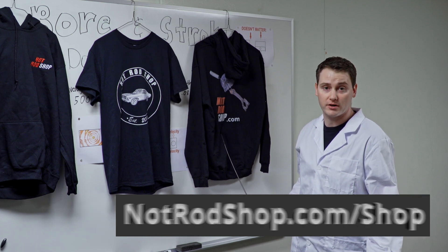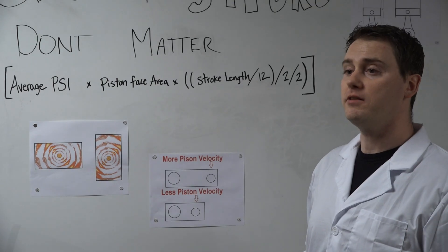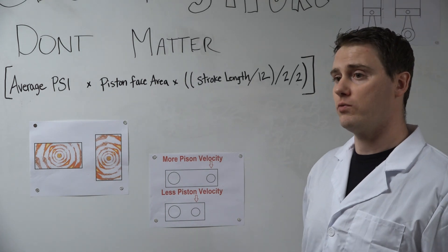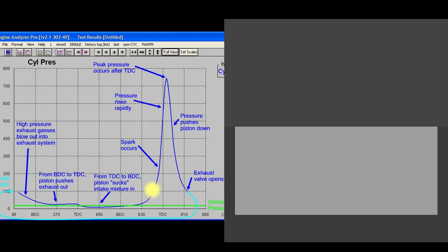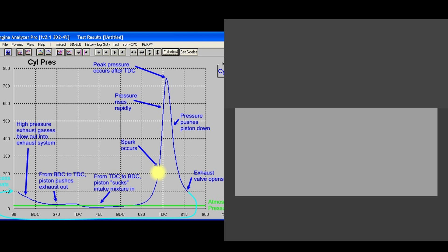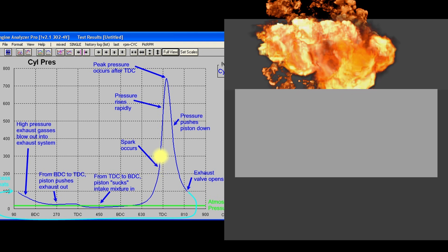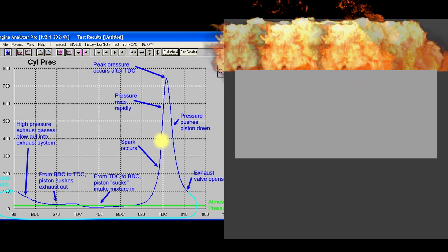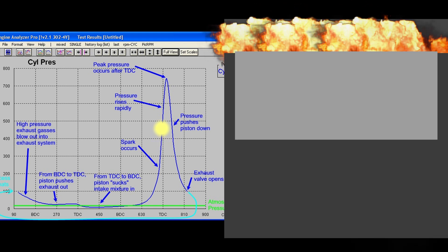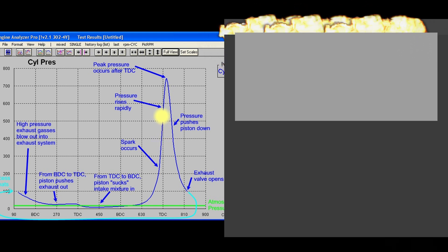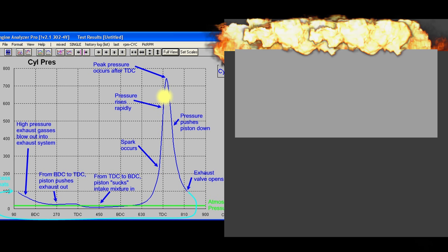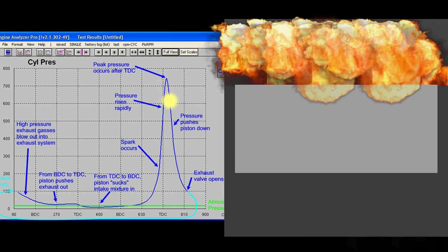To illustrate this point, let's start when the air and fuel mixture is ignited, somewhere around 35 degrees before top dead center. As the flame front expands, the piston is heading up towards top dead center, and pressure slowly rises and reaches a peak somewhere around 25 degrees after top dead center.